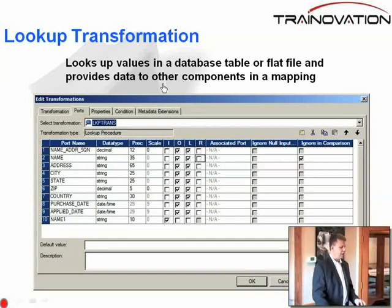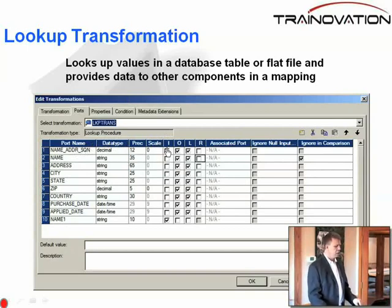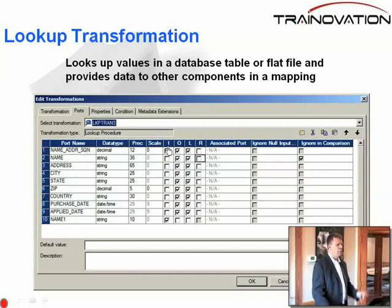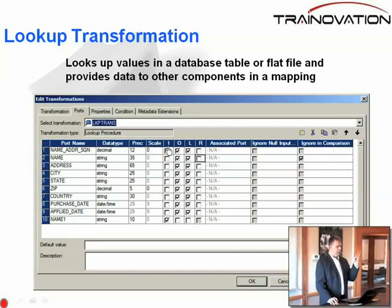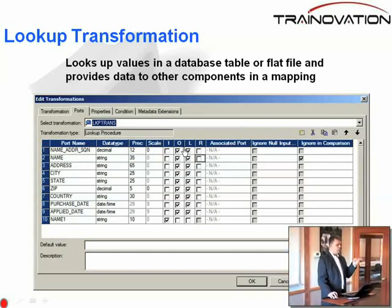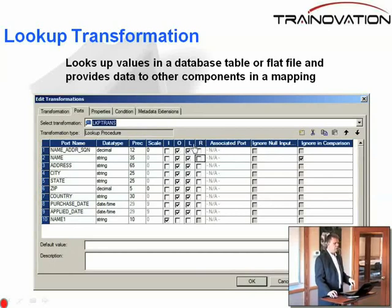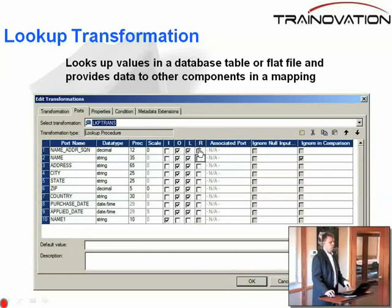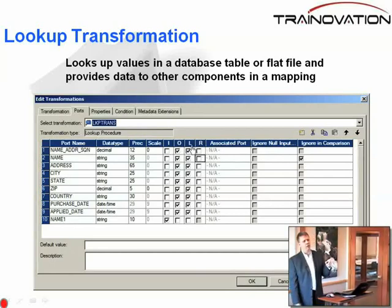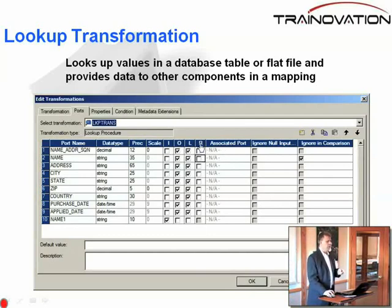We've got the data types, the precisions, and the scales, and our familiar input and output. And now we have two new columns: one called L for lookup, and one called R for return value.